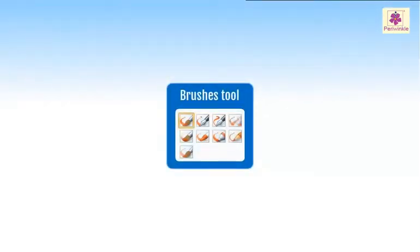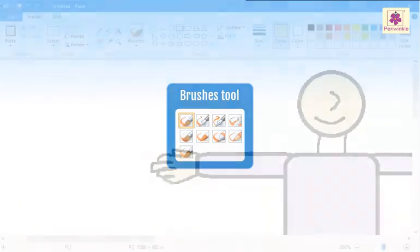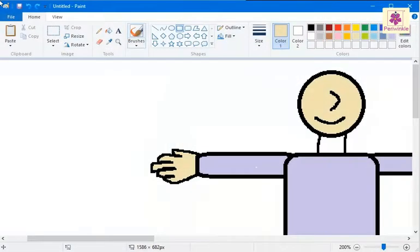Let's learn how to create different outlines using the various brush options available under the brushes tool in MS Paint. These outlines are similar to the brush strokes you make while painting on a paper with a real brush.